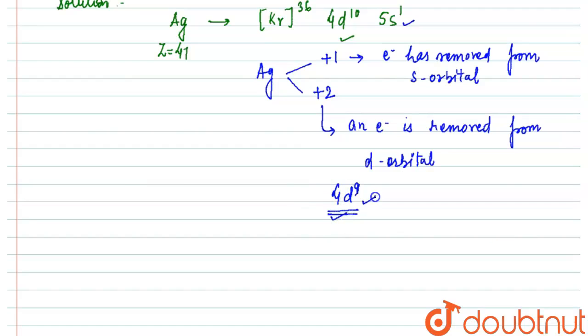So 4d9 means incompletely filled or incompletely filled d orbital. So now we have incompletely filled d orbital.